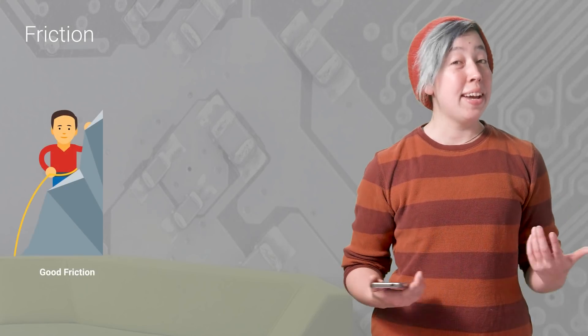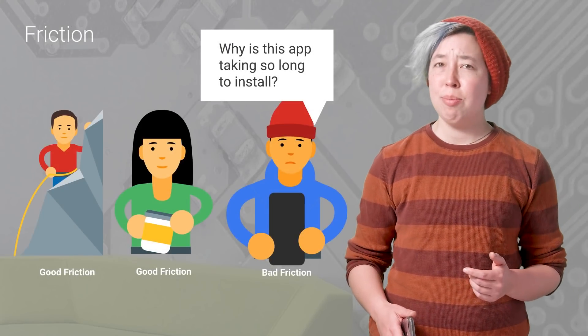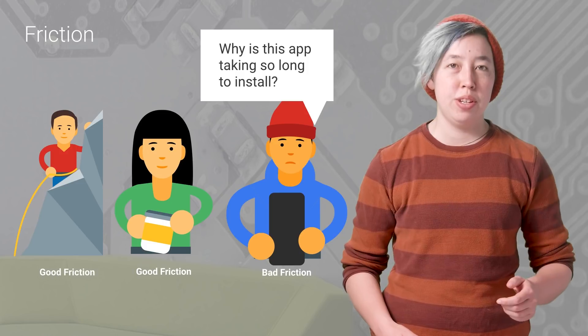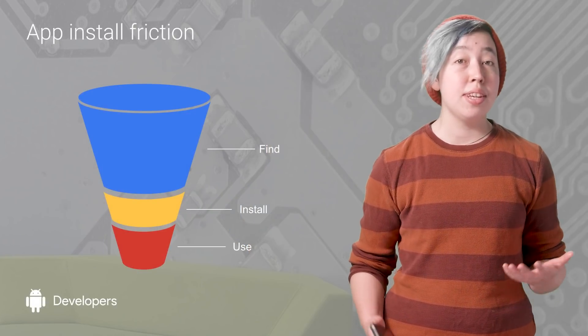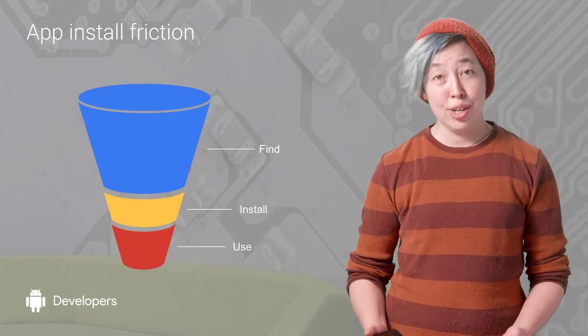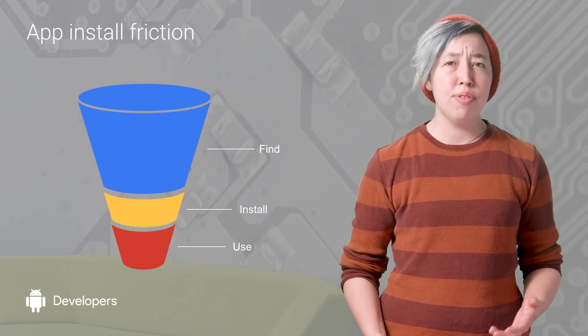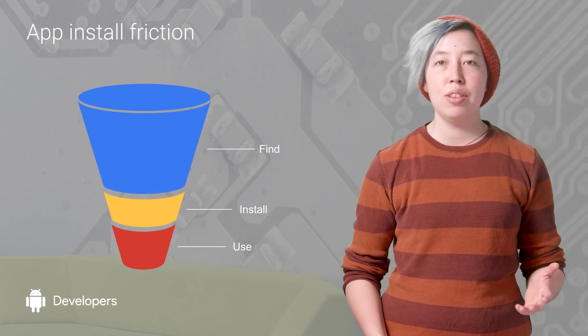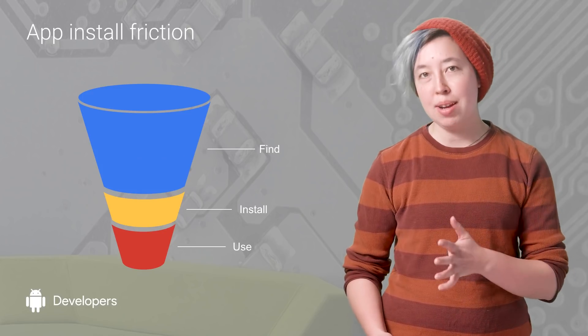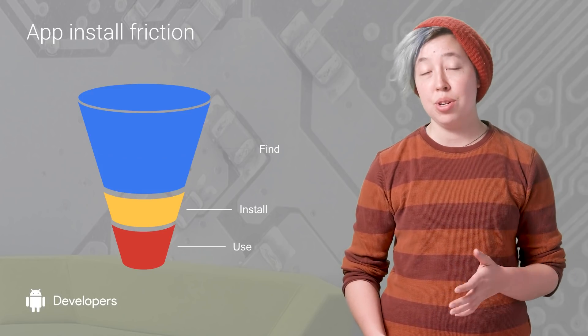FRICTION. It's good for rock climbing and opening jars, but in the world of app development, it's a force that we seek to minimize. App installation is a major source of friction. Even for small apps, the installation screen can lose you 5% to 10% of your users.